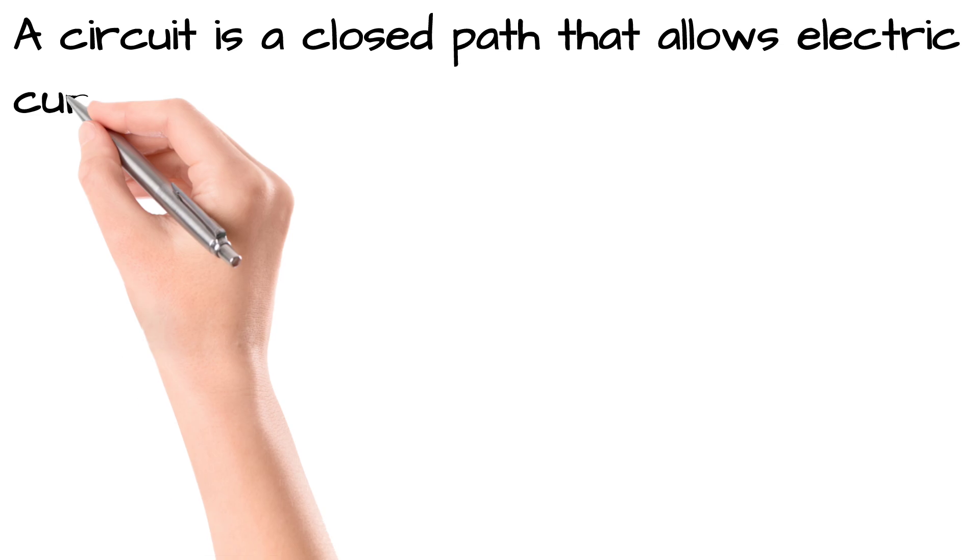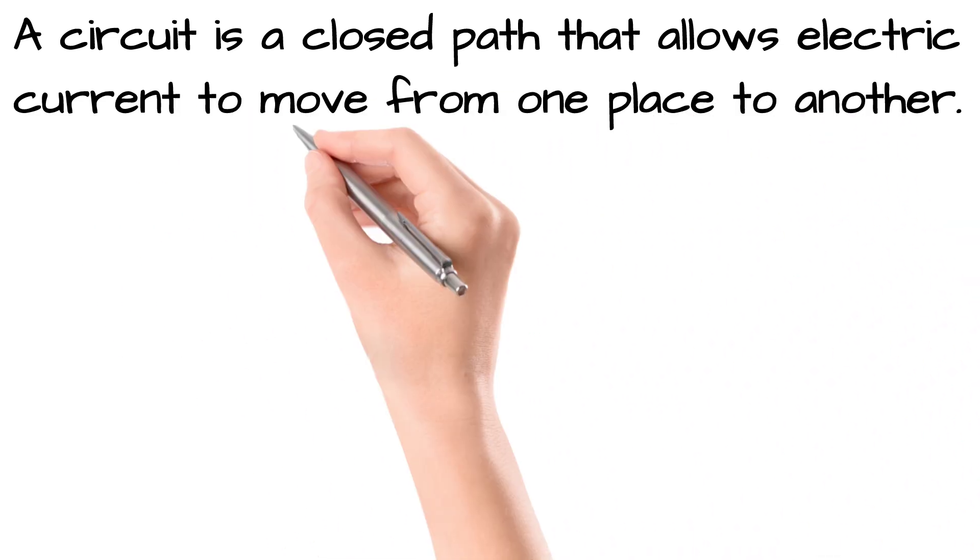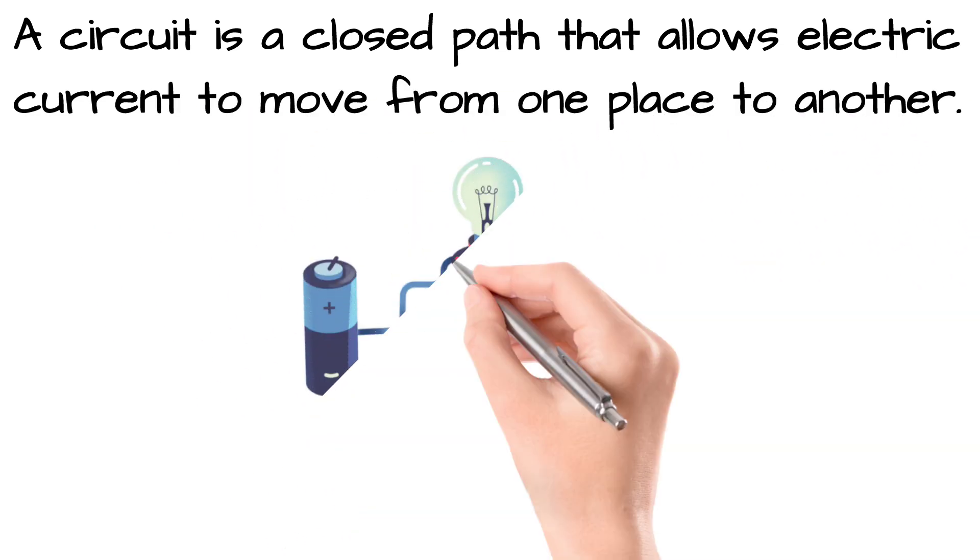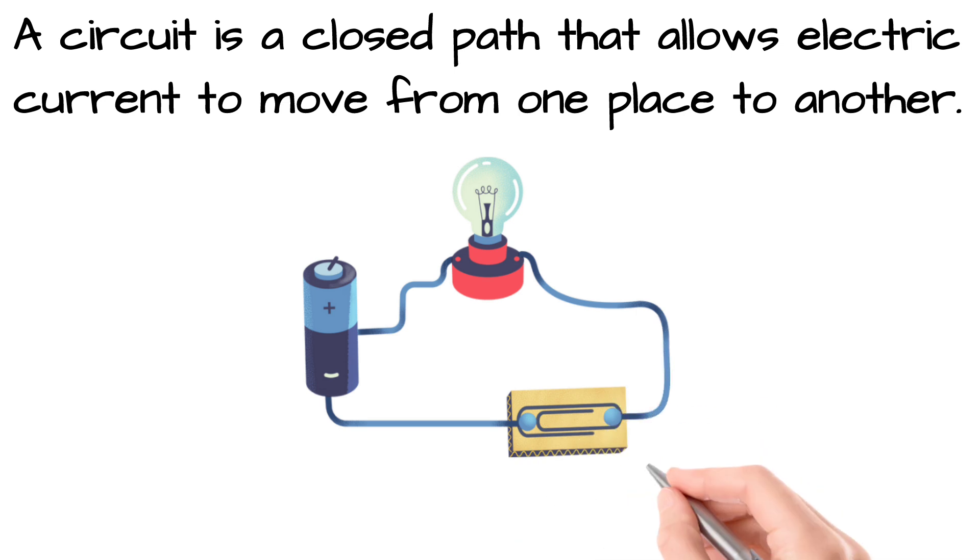An electric circuit is a closed path that lets electric current move from one place to another. The current travels from a power source, through wires and components, and then returns back to the source, just like a racetrack for electricity.